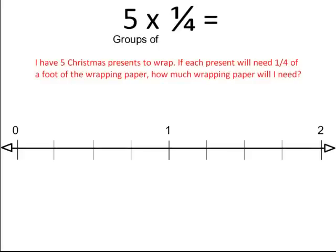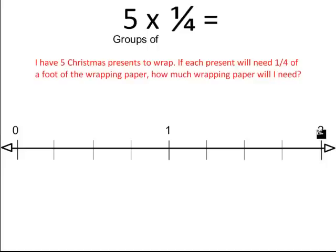We just used a basic model for that fraction multiplication problem. Now we'll use a number line model for a more effective representation. Same problem — 5 times 1 fourth — and the same story problem about 5 Christmas presents needing 1 fourth of a foot of wrapping paper each. Here I have a number line starting from 0, 1, and 2. I can tell we're working in fourths because each section between 0 and 1 is divided into 4 equal sections.